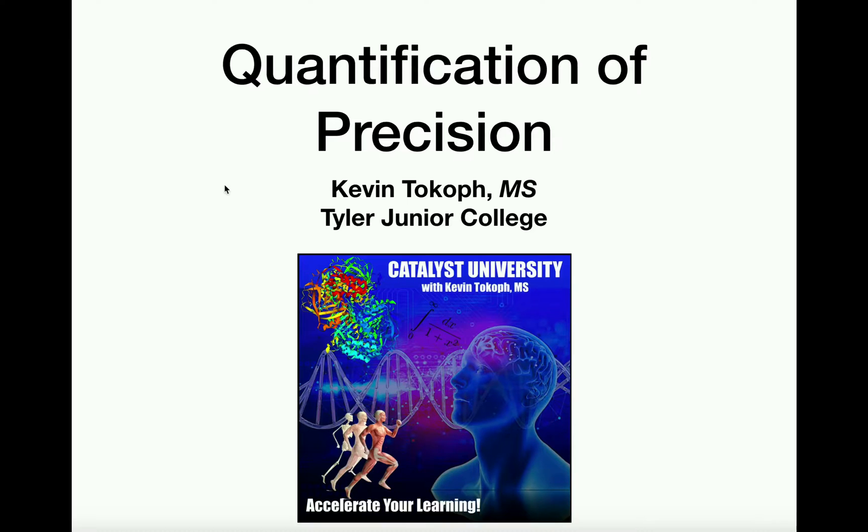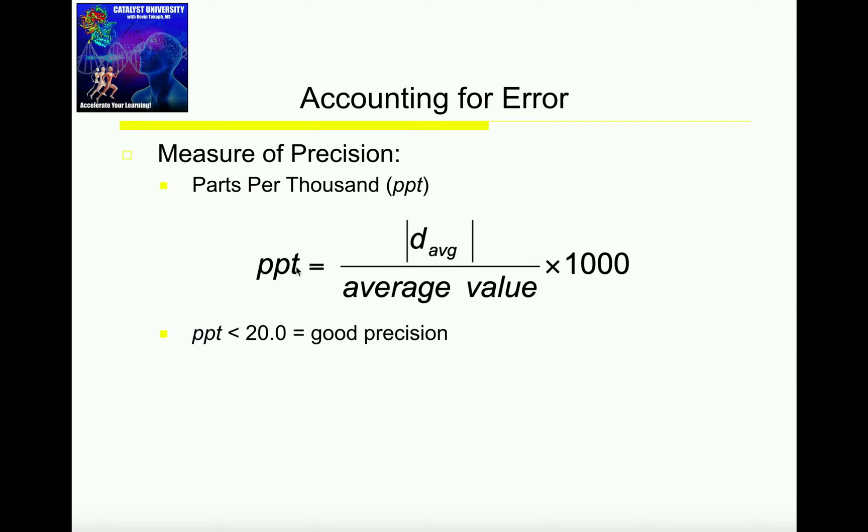In this video, we're going to discuss more on the quantification of precision. In the previous video, we talked about calculating parts per thousand, which allowed us to determine whether or not our data set was precise or imprecise. If our parts per thousand was less than 20.0, we had good precision. If it was greater than this, we had not so good precision.